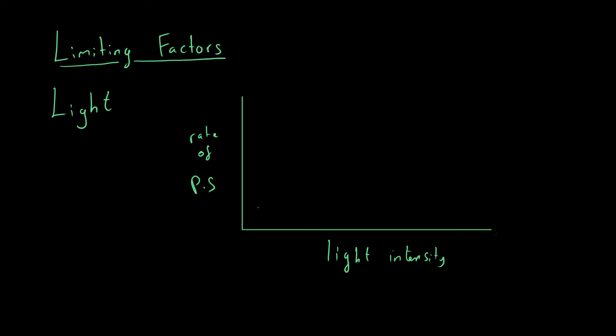The graph is going to look like this. At zero light intensity, you have no photosynthesis. As you increase the amount of light, the rate of photosynthesis increases, because the leaf is able to take in more light and carry out photosynthesis more efficiently. But as you carry on, the graph starts to flatten off. After a certain light intensity, the plant has all the light it needs, so increasing light doesn't make any difference. We say that something else is then limiting the rate of photosynthesis — perhaps not enough water to carry on at that rate.